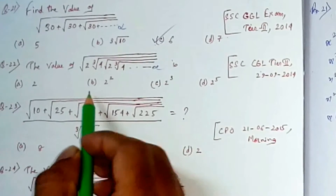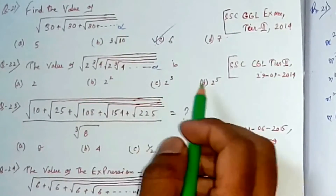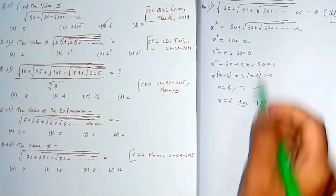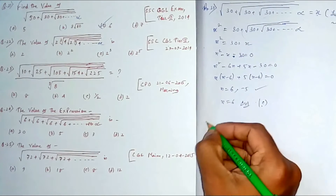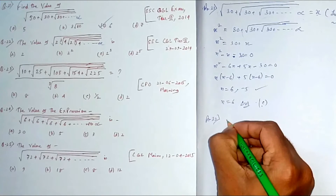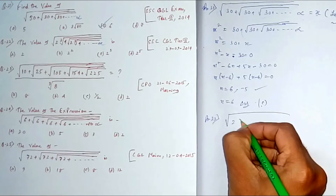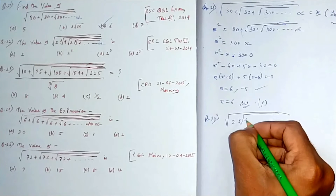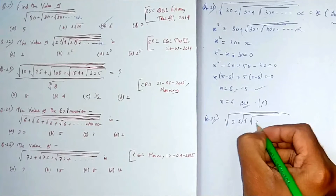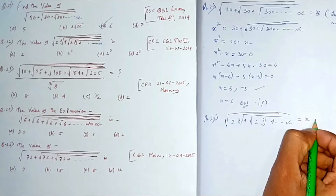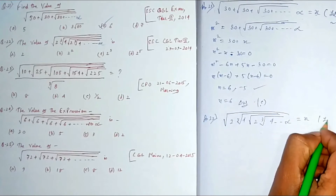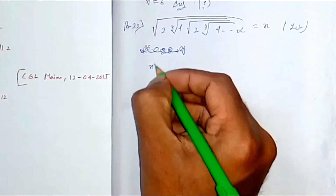The options are: option A is 2, option B is 2², option C is 2³, and option D is 2⁵. Hopefully you've understood the trick from the previous solution. Please pause this video and try to do it yourself. Now let me copy the question: it is √(2·∛4·√(2·∛4·...)) going to infinity. Similar to the previous problem, let the whole expression equal x.